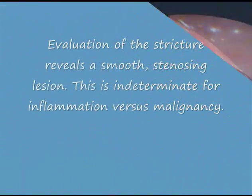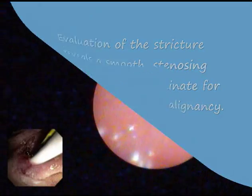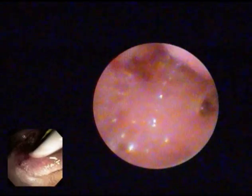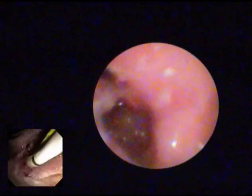Evaluation of the stricture itself reveals a smooth stenosing lesion; this is indeterminate for inflammation versus malignancy. Note the stricture as the pancreatoscope is pulled back through it.